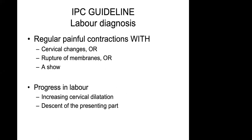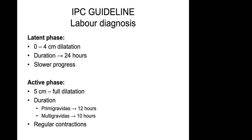Labor diagnosis is not being reinvented. Labor is still contractions with any of the following: cervical changes, rupture of membranes, or a show. What is progress in labor? It is more than cervical dilatation alone. If the cervix dilates, we have progress. But if we also have descent of the presenting part — going from a poorly applied head to actual descent — that woman's labor is actually progressing. The latent phase is zero to five centimeters, including four, with duration up to 24 hours. The latent phase takes time: the cervix needs to efface and dilate, the head needs to descend — all on the condition that both mother and fetus are doing well.